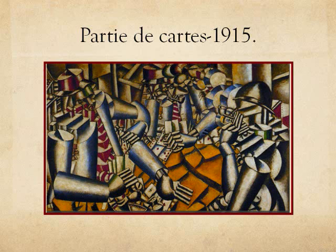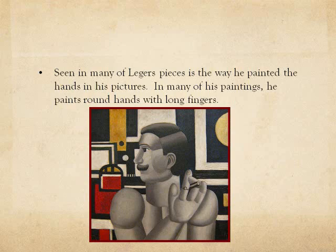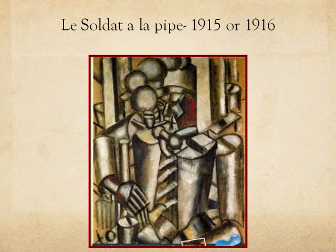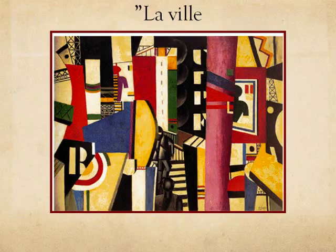This was a main difference in the painting styles of Picasso and Braque versus Léger. A recurring symbol in many of Léger's pieces is the way he painted hands — in many of his paintings, he paints round hands with long fingers. In this particular painting, we can see a major theme of Cubism: geometric shapes and intersecting lines. Le Soldat à la Pipe, which translates to A Soldier with a Pipe, is another painting by Léger influenced by his time in the war. This painting is built up of gray vertical planes and diagonal lines. He adds little touches of red to the human body, and the shapes in which the color falls are very geometrical.